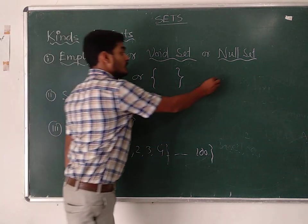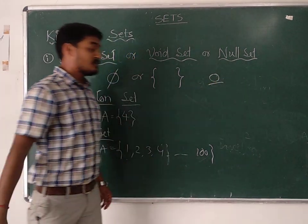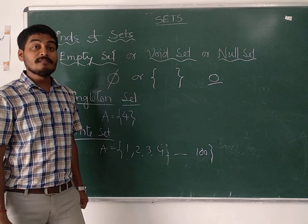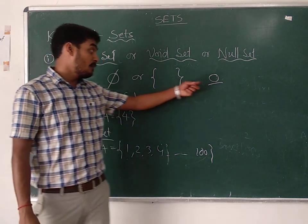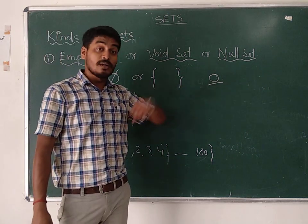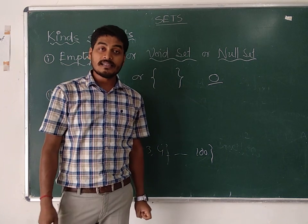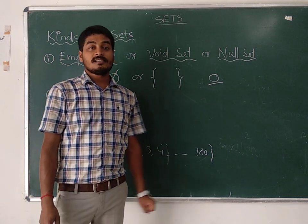The answer is zero. Can you state the number of elements in the empty set exactly? Yes — zero elements. So the empty set itself is a finite set, because we can represent the number of elements by a simple number: zero.